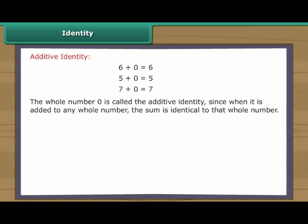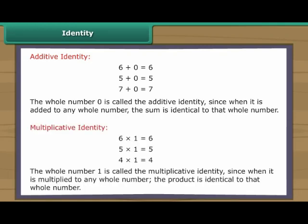The whole number zero is called the additive identity. Since when it is added to any whole number, the sum is identical to that whole number. The whole number one is called the multiplicative identity. Since when it is multiplied to any whole number, the product is identical to that whole number.